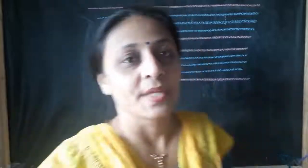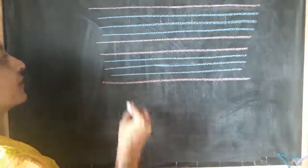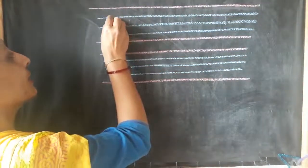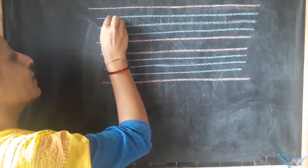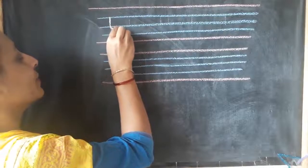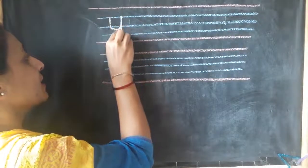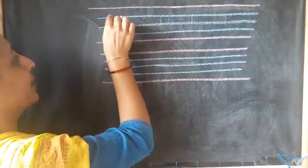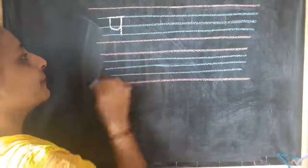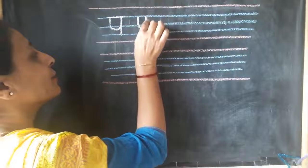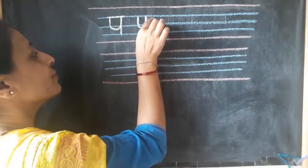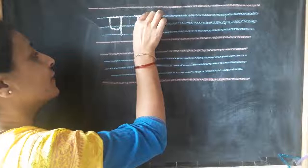Children, let's see the division of Pa, Fa, Ma on the board. First of all we are going to write Pa. Here on the blue line, I will start from the first blue line, go down with a standing line — Pa. What comes after Pa? Fa. Same as Pa, we are going to write Fa and then make one elephant's trunk — Fa.